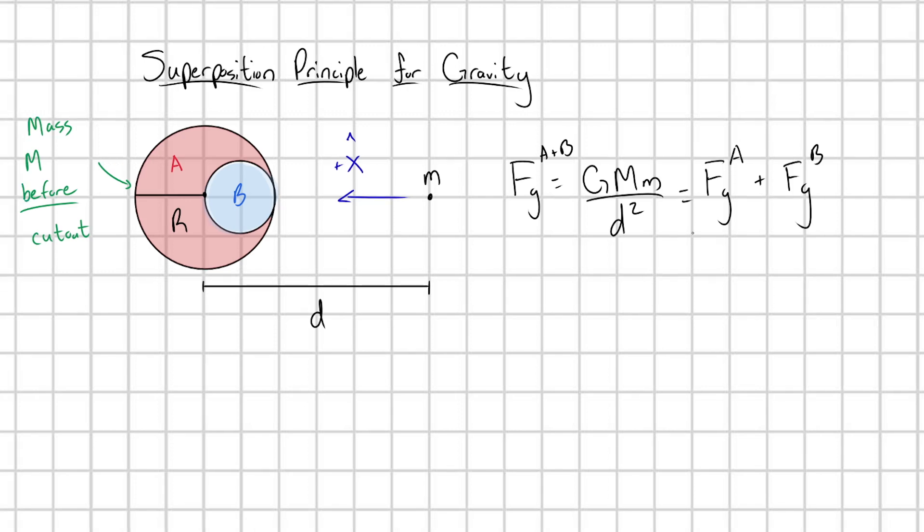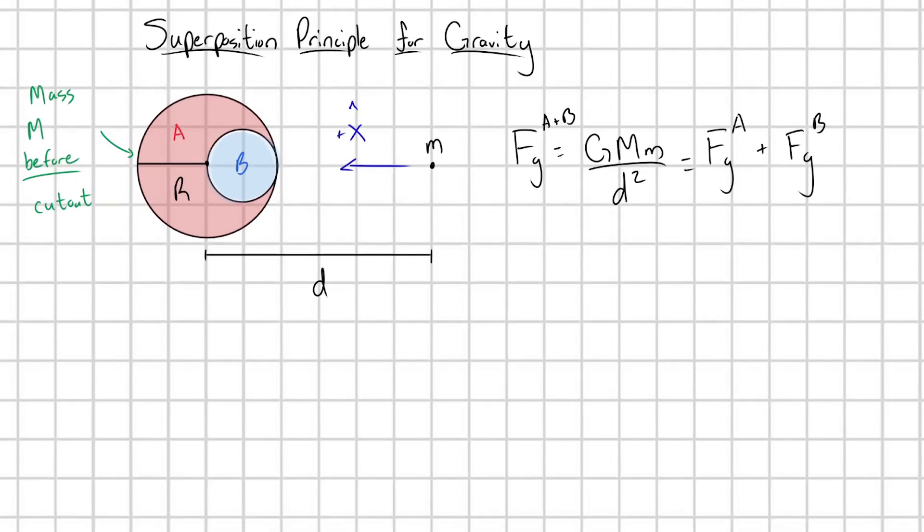But what am I actually interested in? I'm just interested in finding the force of gravity from the A region, because we took this planet and we hollowed it out. We got rid of that B region. So let's just find the gravitational force from the A particles, and that's going to be our answer. In other words, let me move FGB to the other side. So I have FGA is going to be equal to GMm over d squared minus FGB. And so to find the force of gravity from B, let's go ahead and start by finding the radius of this little subsystem here.